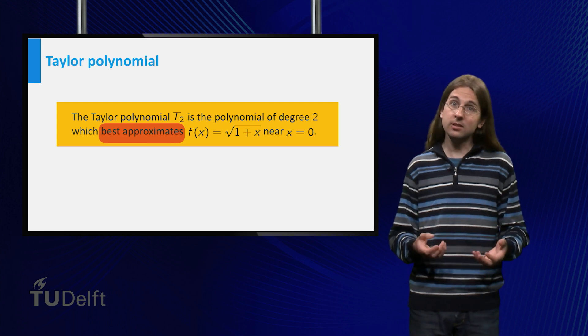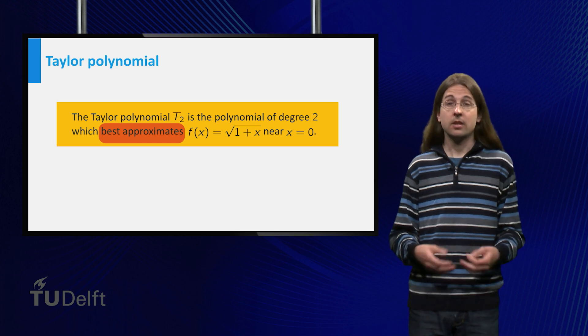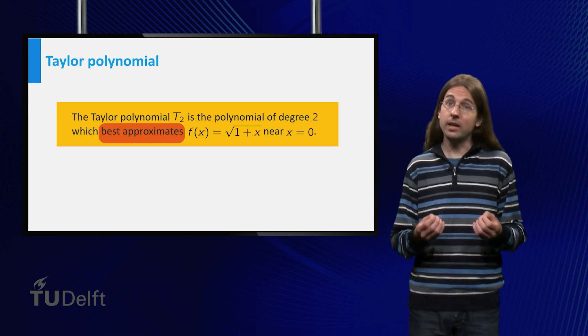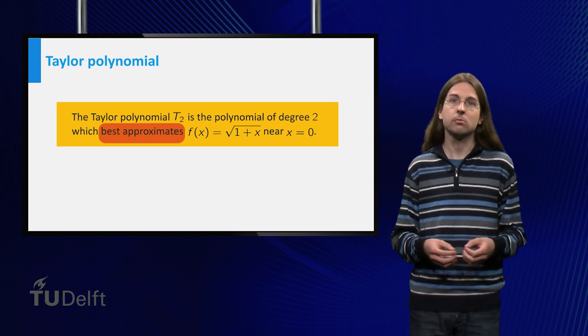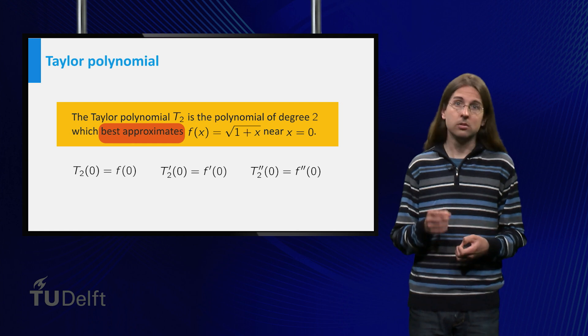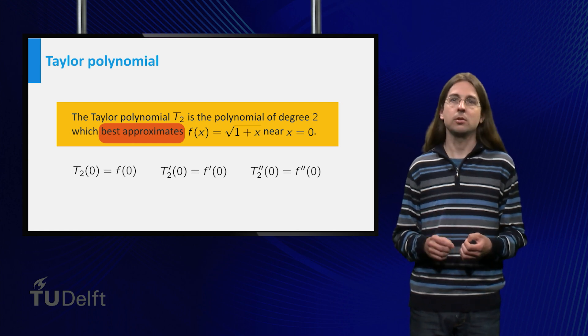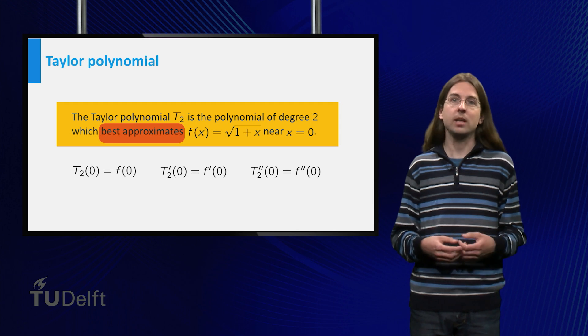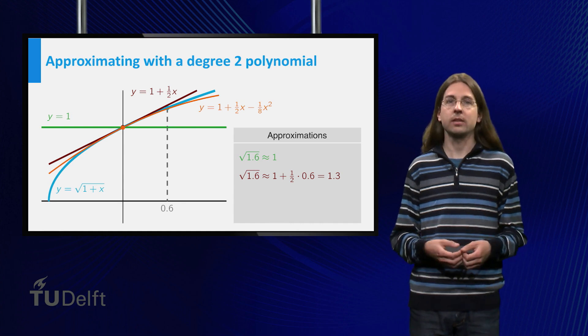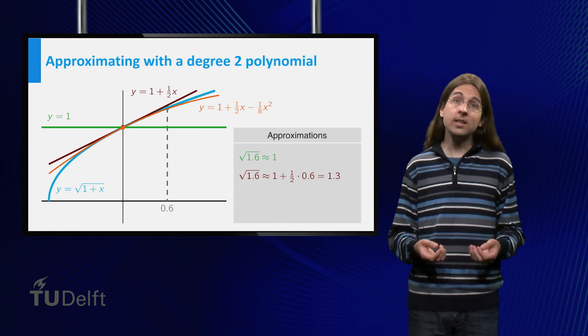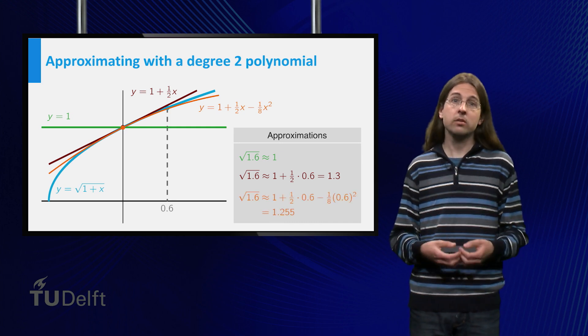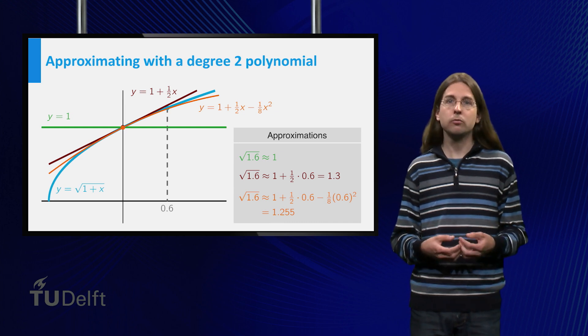The formula for the tangent line is calculated using the derivative. In fact, the function 1 plus x over 2, giving the tangent, has the same value and derivative as the function square root 1 plus x at x equals 0. The degree 2 Taylor polynomial can be calculated by also insisting that the second derivative of f equals the second derivative of the approximating polynomial. The result is 1 plus x over 2 minus x squared over 8. As you can see, this tracks the graph of square root 1 plus x pretty well.